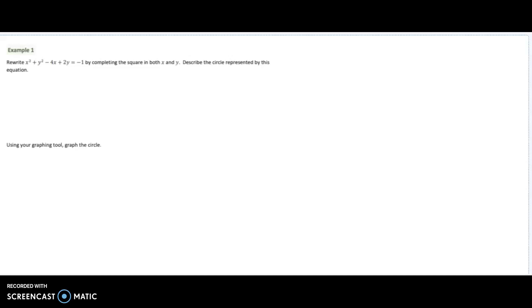Rewrite it by completing the square in both x and y. Okay, so this is just kind of messy, but let's do it right quick. First of all, I'm going to rewrite it as x squared minus 4x plus y squared plus 2y equals negative 1.